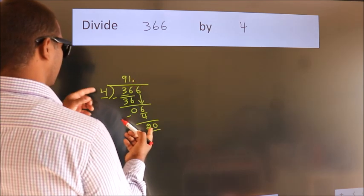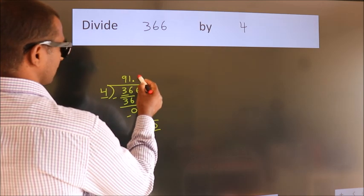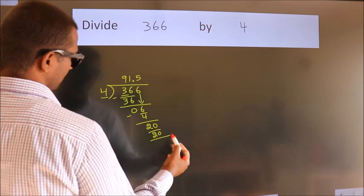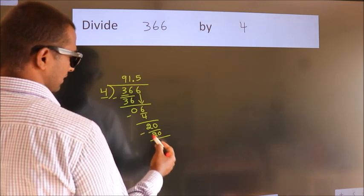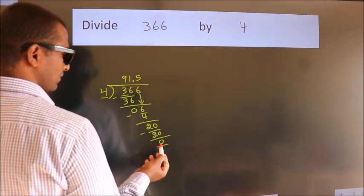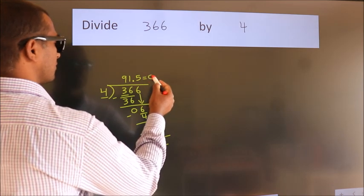When do we get 20 in the 4 table? 4 times 5 is 20. Now we subtract and get 0. We got remainder 0, so this is our quotient.